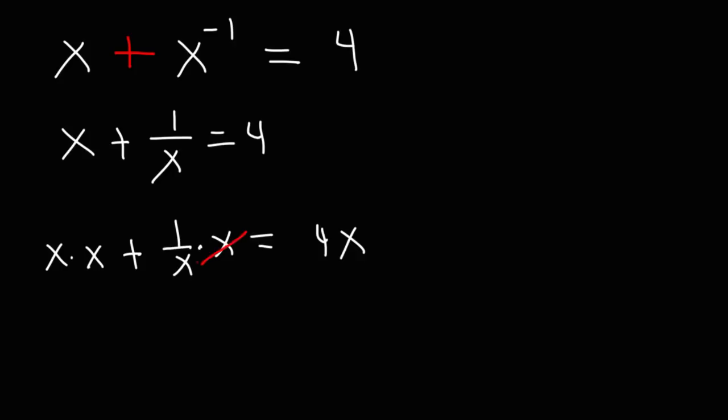x times 1 over x, the x variables will cancel, giving us 1. x times x, that's going to be x squared. When you multiply by a common base, you need to add the exponents. 1 plus 1 is 2. So we have x squared plus 1 is equal to 4x.